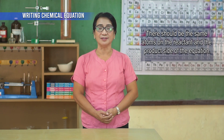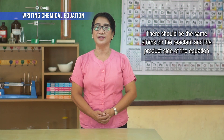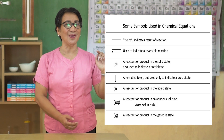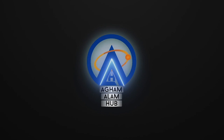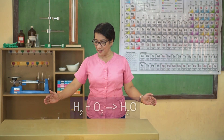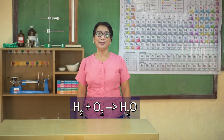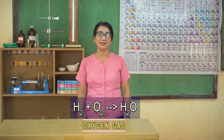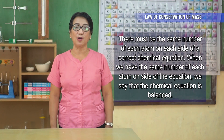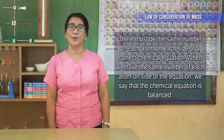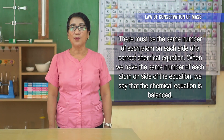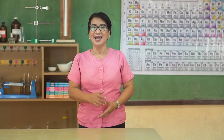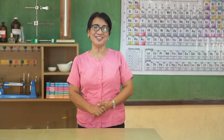Fifth, there should be the same atoms on the reactant and the product side of the equation. This chemical equation can be read as: the reaction between hydrogen gas and oxygen gas will yield water. To obey the law of conservation of mass, there must be the same number of each atom on each side of a correct chemical equation. When we have the same number of each atom on each side of the equation, we say that the chemical equation is balanced. Remember, an equation is not correct until it is balanced.